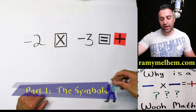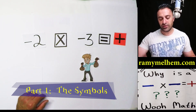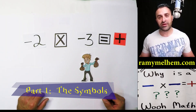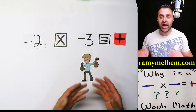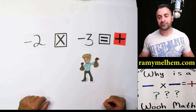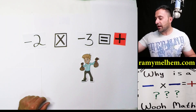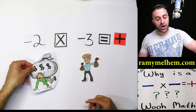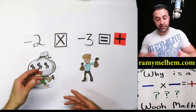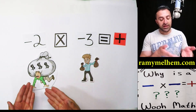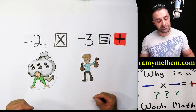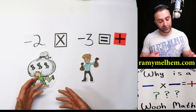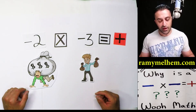I'm going to show you a quick cartoon here. A little guy who's got some money and he's really happy — he's got two bags. I've got another guy here who's got a lot more money than him, but he's not very happy — it's on his back. It's a symbolic kind of cartoon.